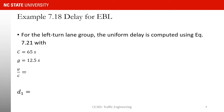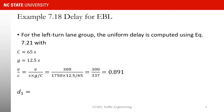We know that the cycle length at the intersection is 65 seconds. The green time for this lane group is 12.5. Here I want to find V over C, where V is the flow rate and C is the capacity. You can find the capacity by multiplying the saturation flow rate by the G over C ratio, where G is the green time and C is the cycle length. So if you put all the numbers in the equation for this lane group: V is 300 vehicles per hour per lane, saturation flow rate was 1750, G is 12.5 and C is 65. That gives us a V over C ratio of 0.891.